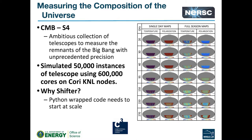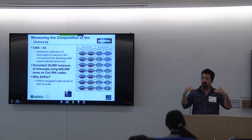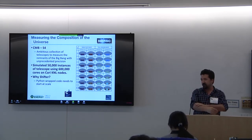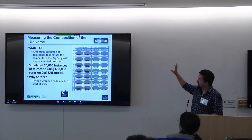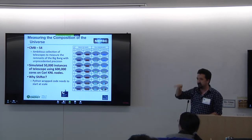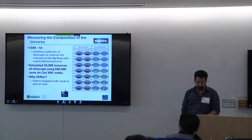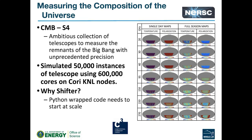What do people use Shifter for? Scaling up massive Python applications. Here's an example: a simulation using a code called Toast, which ran on all of the Cori KNL nodes. That application is a layer of Python with C++ code underneath for high performance. They calculate the cosmic microwave background at different frequencies, simulating weather and different sites. They ran 50,000 realizations of the CMB simulation using the entire Cori KNL partition. Without Shifter, they could never have started the application, but with it they started up in about 60 seconds.